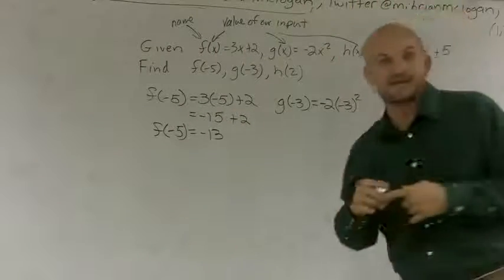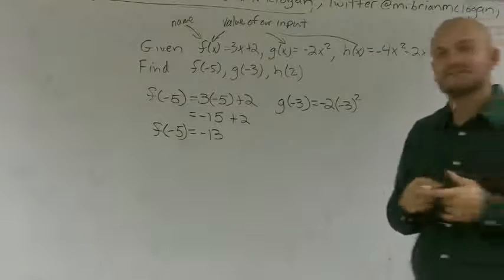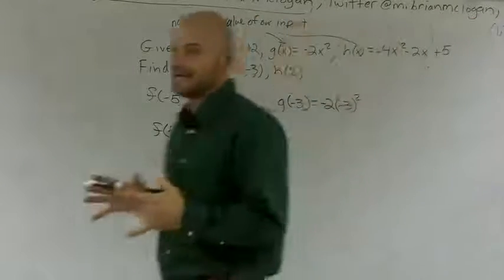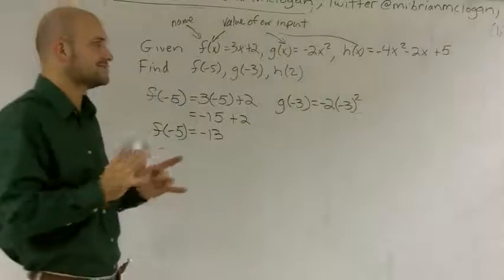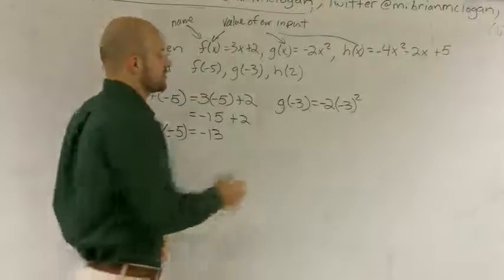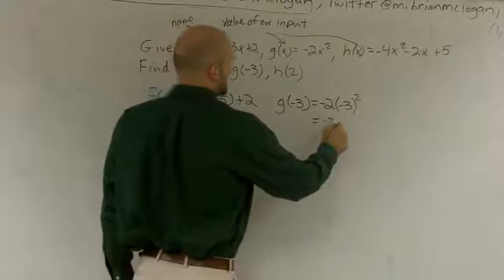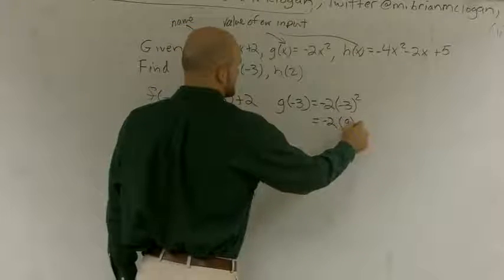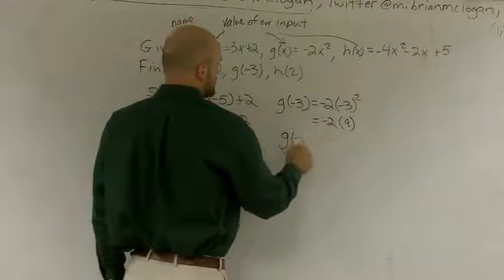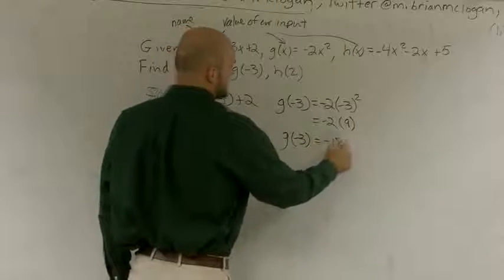Because a lot of students make mistakes with those. So negative 3 times negative 3 is 9. So I have negative 2 times positive 9. So therefore, I have g of negative 3 equals negative 18.